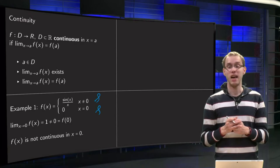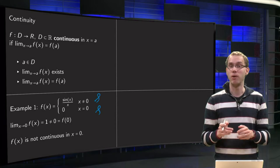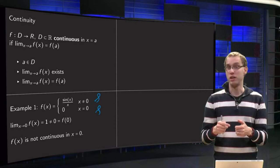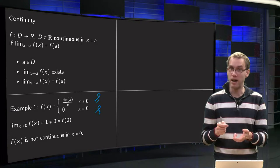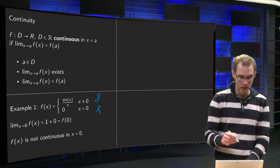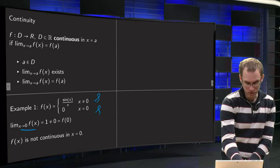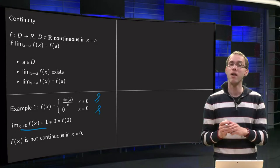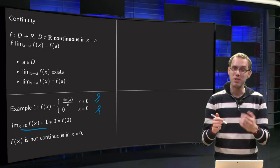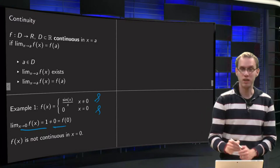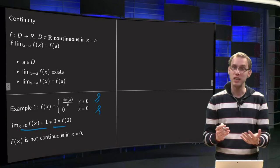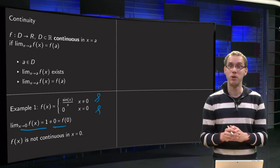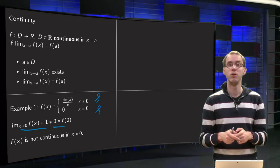So is f(x) continuous at zero? Everywhere else it will be fine, but what about zero? Well, zero is now in our domain, so that is fine. We can compute lim(x→0) f(x) = 1, so that limit does exist, so the first two are fine. But the third one, this limit does not equal zero, which equals f(0). So in this case our function f(x) is not continuous at zero because the limit does not equal the function value.